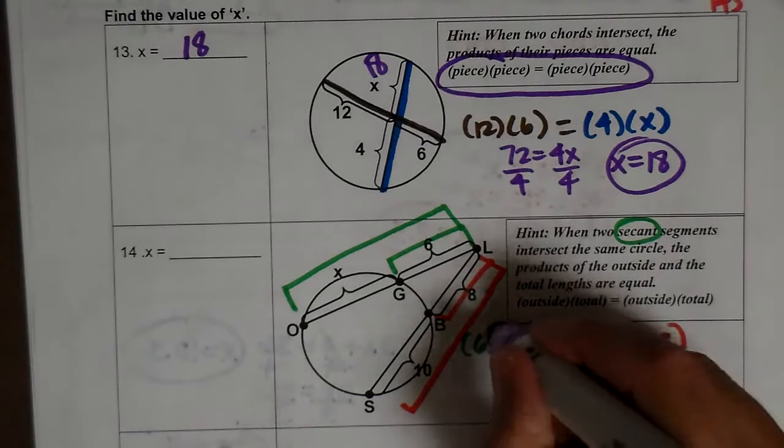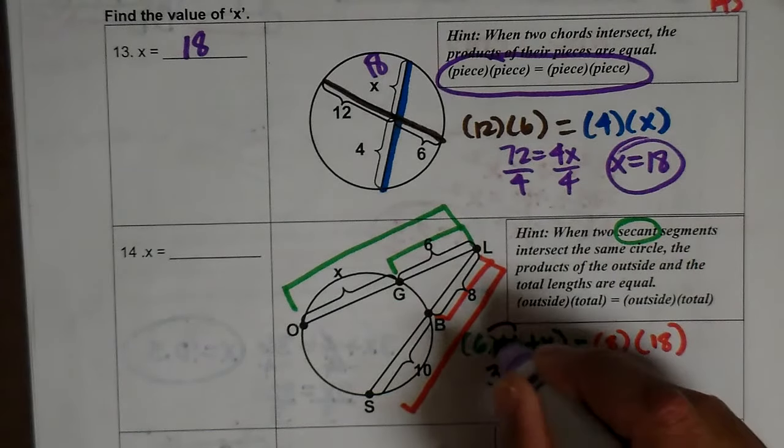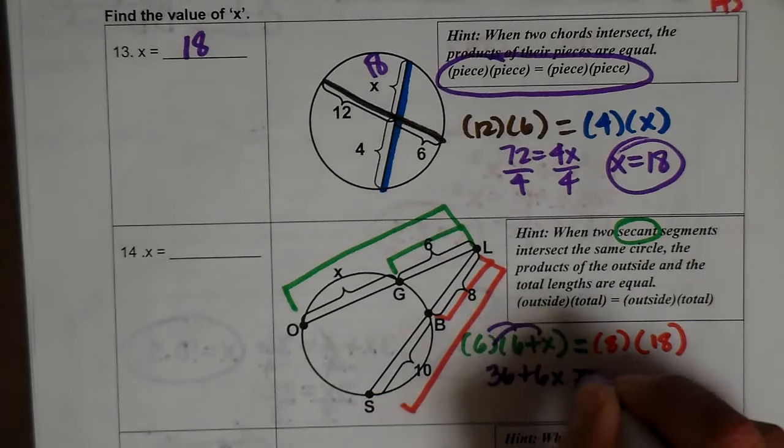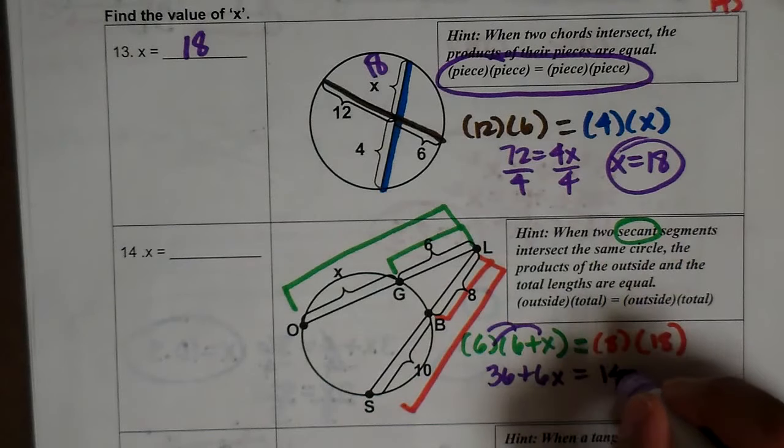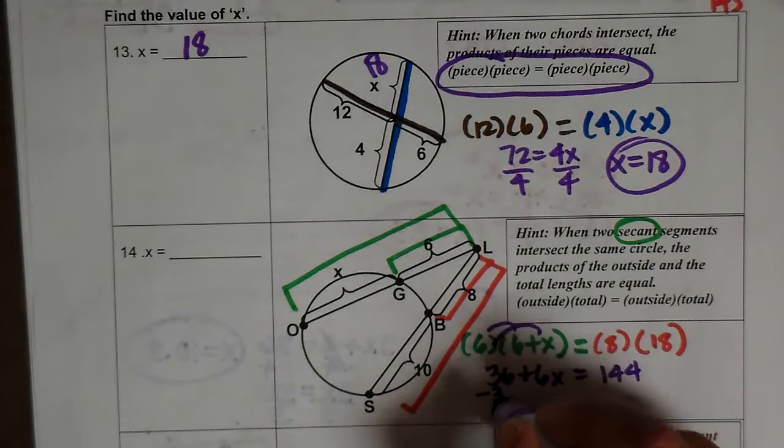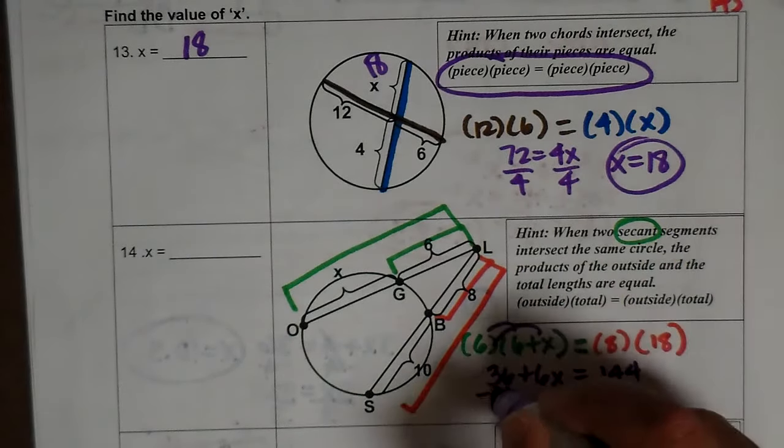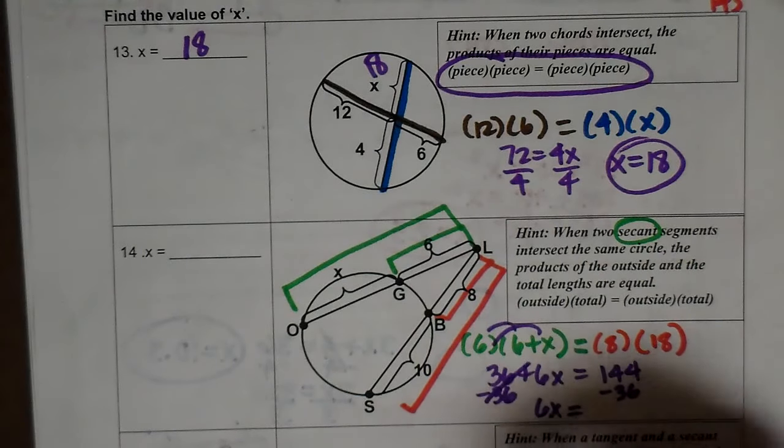So I'm going to distribute 36 plus 6x equals 8 times 18, which is 144. I'm going to subtract 36 from both sides. So 6x equals 108.